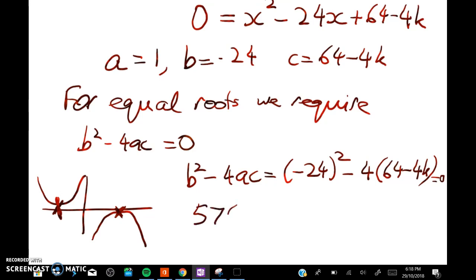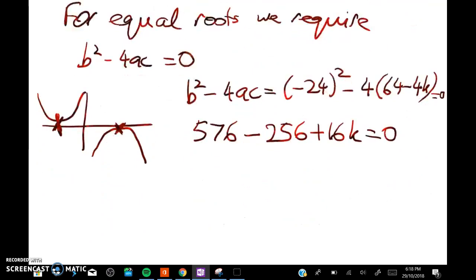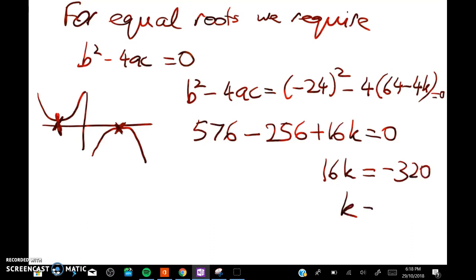Giving us 576 minus 256 plus 16k equals 0. So 16k equals negative 320 and k equals negative 20.